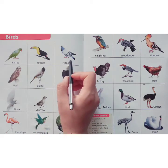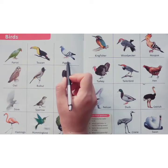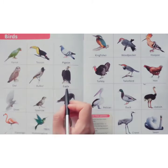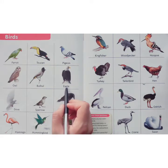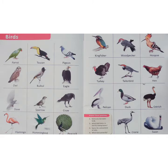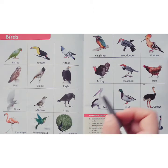Very good. Now the next is pigeon. This is eagle. And this is crow. And this is peacock. Very good.